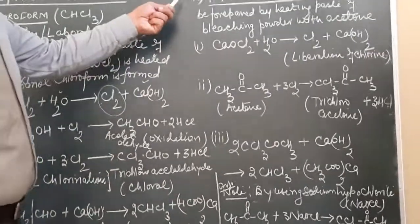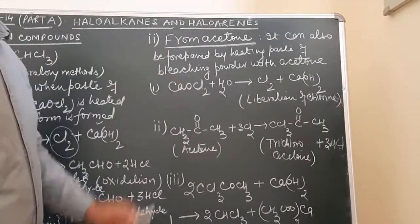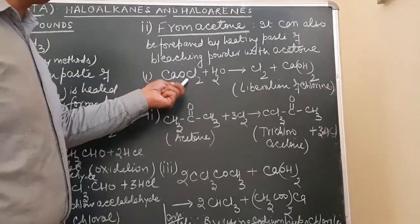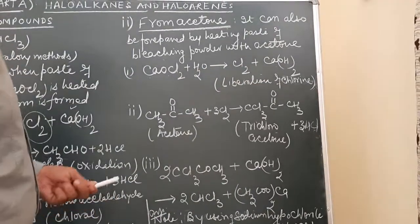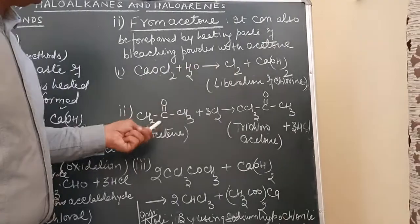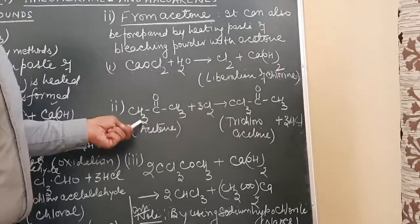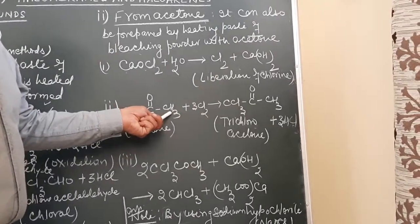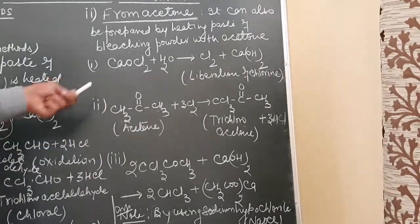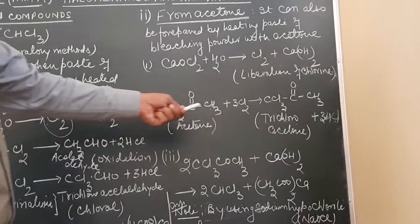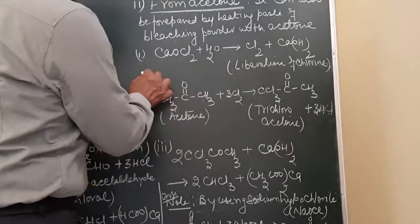The second method is from acetone. Acetone is heated with a paste of bleaching powder. Bleaching powder is CaOCl2, which when dissolved in water results in the formation of chlorine and calcium hydroxide. In this case, chlorine will act only as a chlorinating agent — not as an oxidizing agent — because acetone is already an oxidized product of a secondary alcohol, so there is no need for the oxidation step. It will be only a chlorination step.